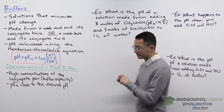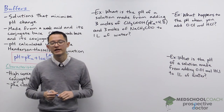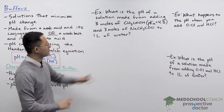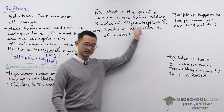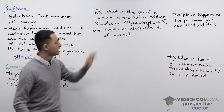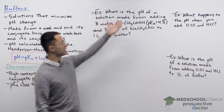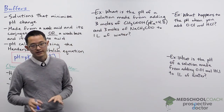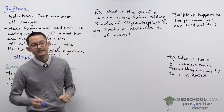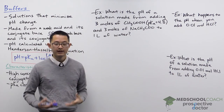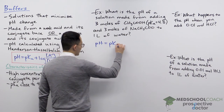Now let's take a look at a few example questions. Our first situation: what is the pH of a solution made from adding three moles of acetic acid, which has a pKa of 4.8, and three moles of sodium acetate, which is the conjugate base of acetic acid, to one liter of water? This is not just an individual acid or base — we've got a weak acid and its conjugate base in the same solution. We're dealing with a buffer, so the first thing you want to do is write out the Henderson-Hasselbalch equation for calculating the pH.